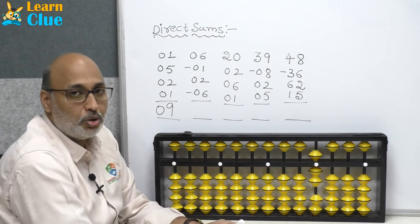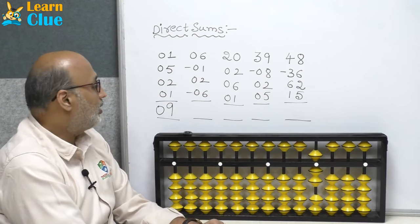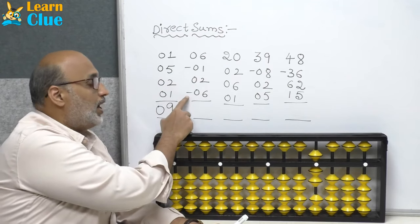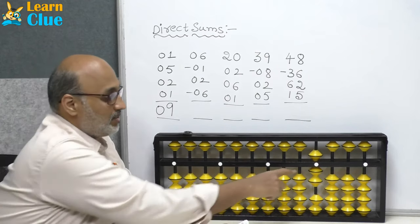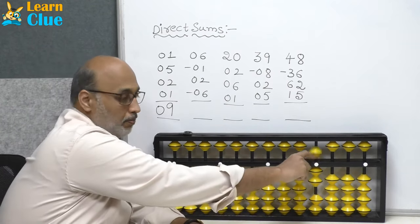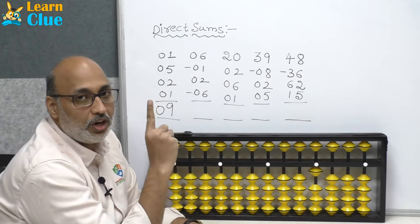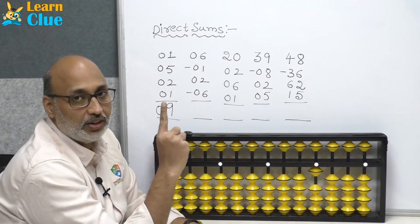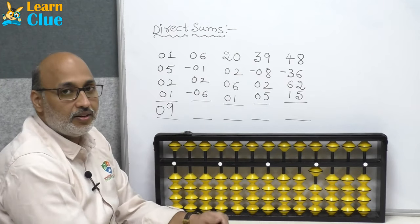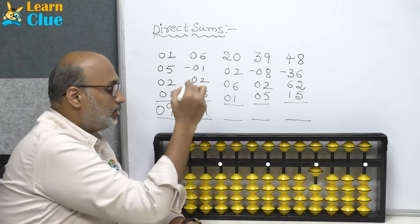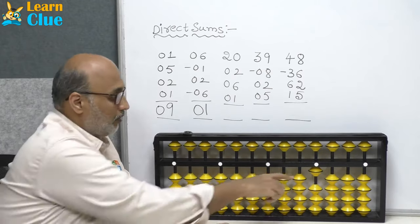Now they are asking minus 6. To do minus 6: minus 5 and minus 1 — use your index finger for subtraction of 5. What is the answer? 1. The answer is 1.